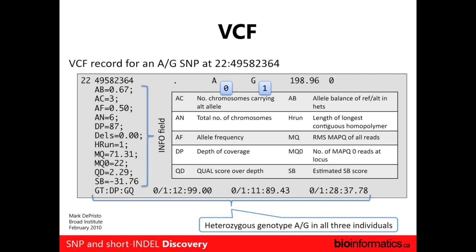Here's another representation of the VCF record, distilling what the common fields mean. QD is a very interesting one — it's basically the quality score divided by the depth, so it's a normalized quality score. MQ is the root mean square of the mapping qualities — that's a useful filter. Also useful is MQ0, the number of mapping quality zero reads at a given location.